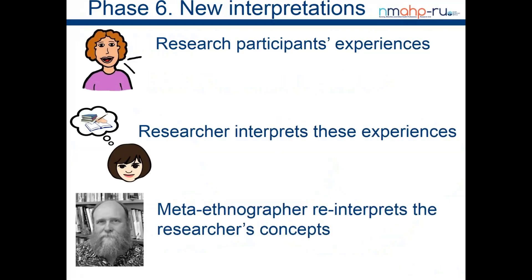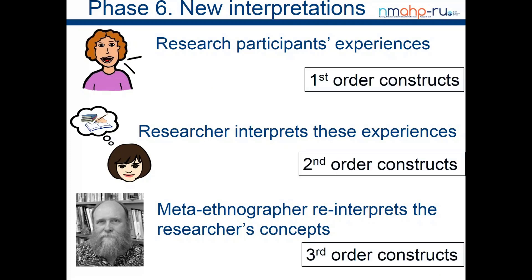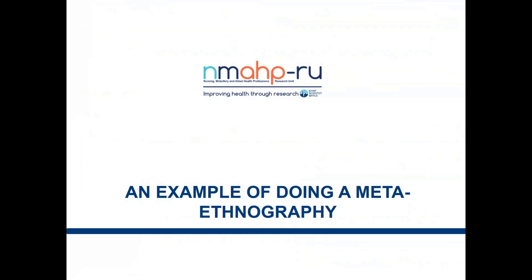First, second, and third order constructs are really important for meta-ethnography. The research participants' experiences are first order; the researcher interpretations are second order. In meta-ethnography you definitely want to get to third order — the new interpretation. This is what the methodology is designed for.